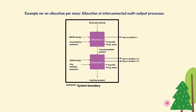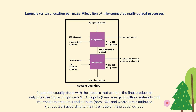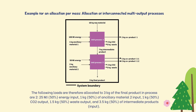Example for allocation per mass: allocation of interconnected multi-output processes. In the simplified example illustrated in the figure, co-products 1, 2.1, and 2.2 leave the system and are employed in other product systems. Allocation usually starts with the process that exhibits the final product as output—unit process 2 in the figure. All inputs (energy, ancillary materials, intermediate products) and outputs (carbon dioxide, waste) are distributed according to the mass ratio of the product output.